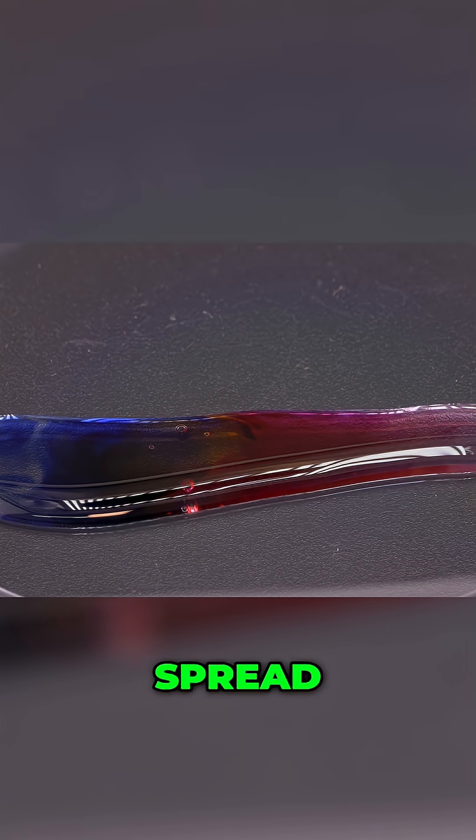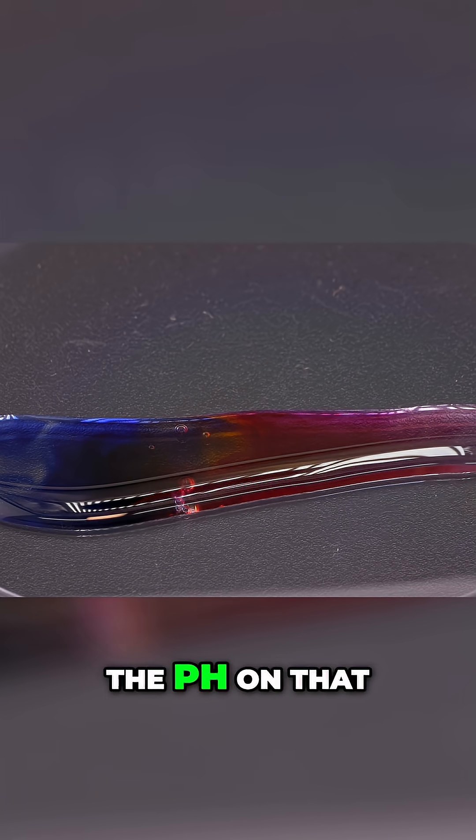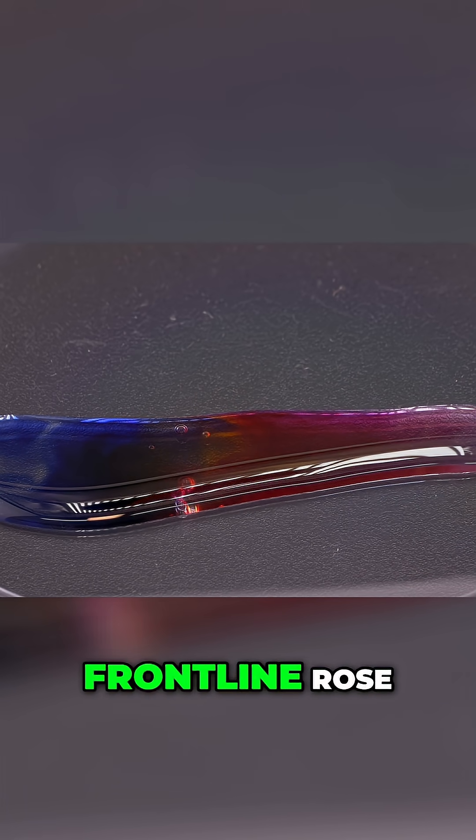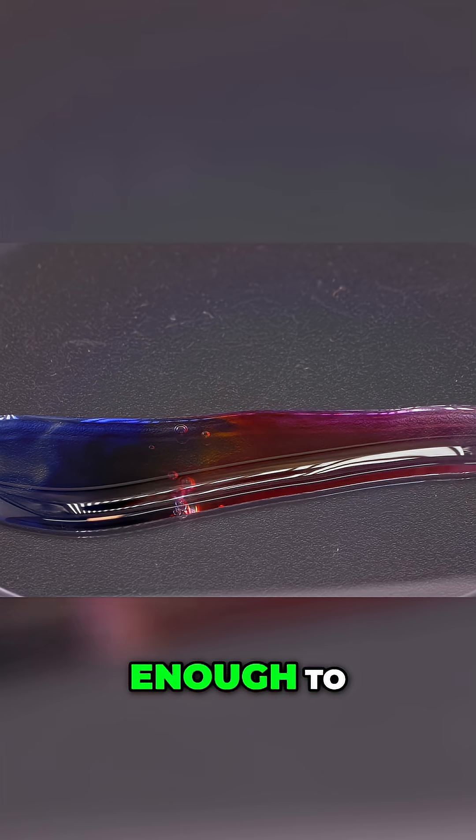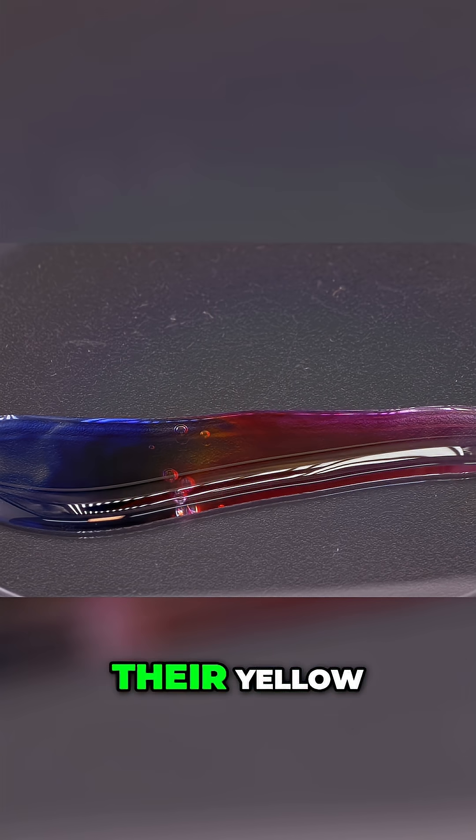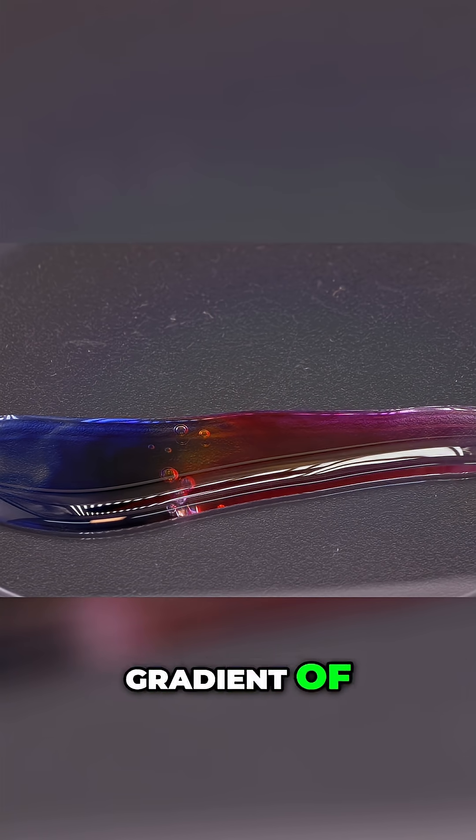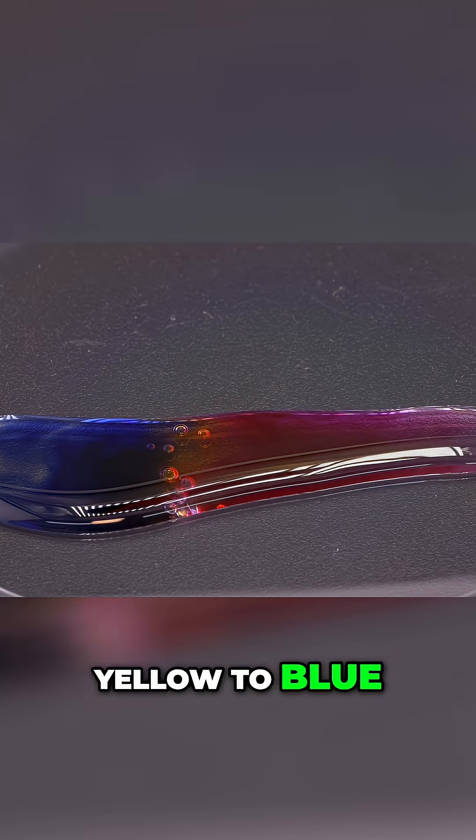As the acid spread out and was weakened by the surrounding blue base, the pH on that expanding front line rose just enough to make the indicator molecules shift into their yellow shape. The result is that incredible gradient of color. Red to orange to yellow to blue. All in one dish.